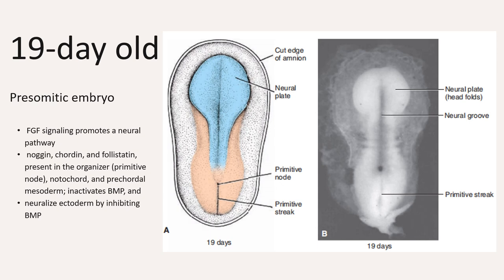In the caudal region, induction of caudal neuroplate structures like the hindbrain and the spinal cord depends on two secreted proteins, which are Wnt3A and FGF.